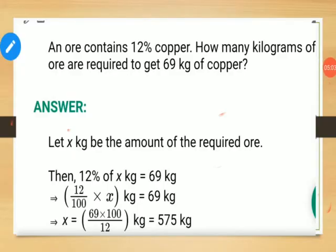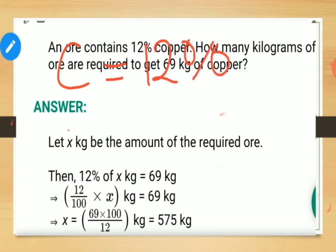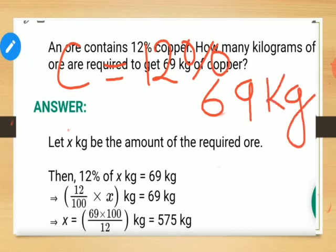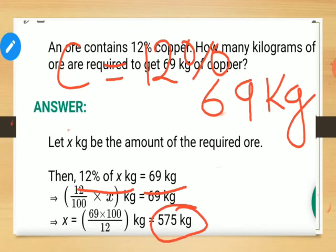Next question: an ore contains 12 percent copper. How many kilograms of ore are required to get 69 kg of copper? The copper percentage is 12 percent and its value is 69 kg. So 12 percent of the total quantity equals 69 kg. Remove the percentage sign: 12 upon 100 multiplied by x equals 69. Cross multiply and solve to get 575 kg of ore.